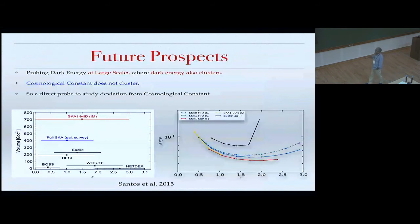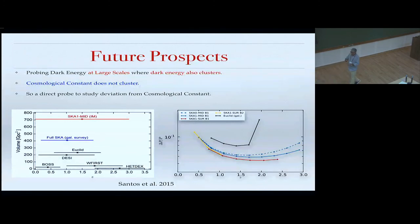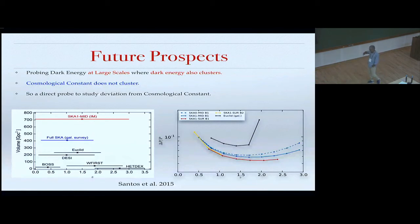What can we do in future? We can probe dark energy at very large scales. Most current data probes dark energy only through its effect on background expansion — via H. But at very large scales, fluctuations in dark energy also become important. Lambda being a constant doesn't fluctuate, but any other dark energy model does. So if we can probe galaxy overdensity at very large scales, there is a possibility to distinguish dark energy models from Lambda CDM.